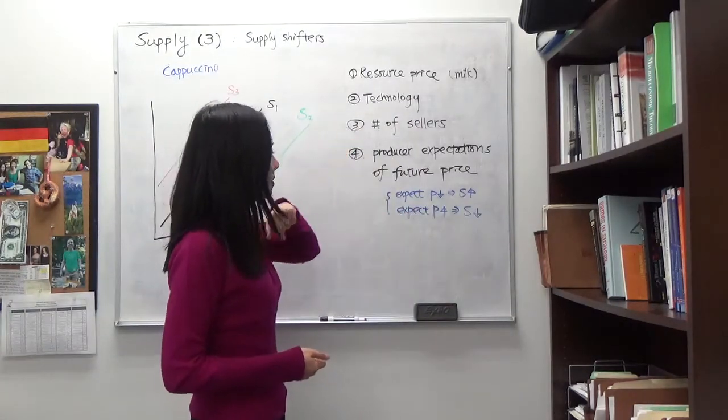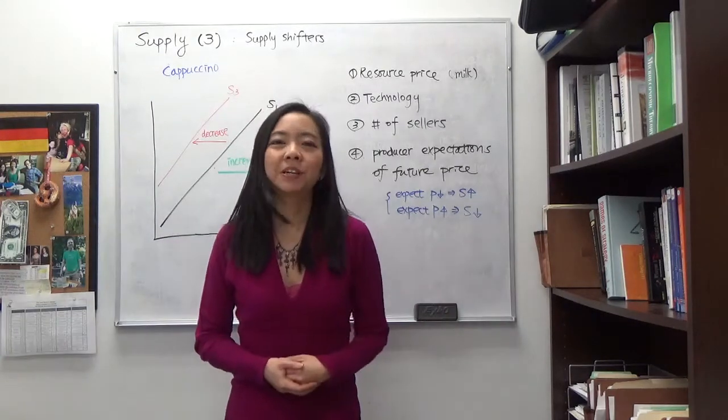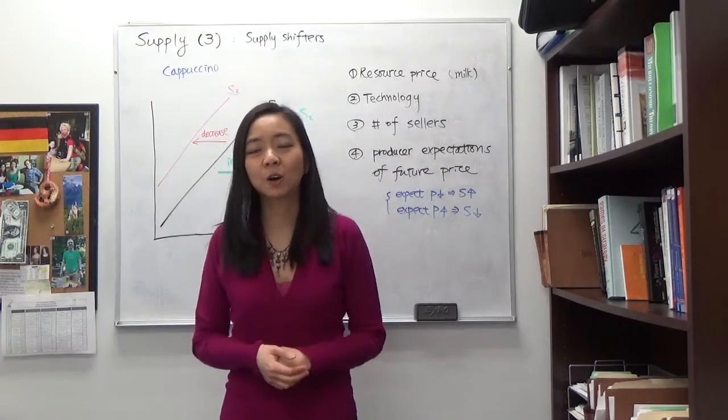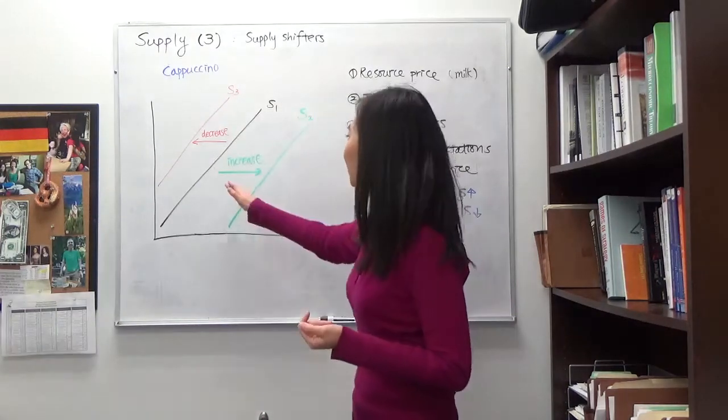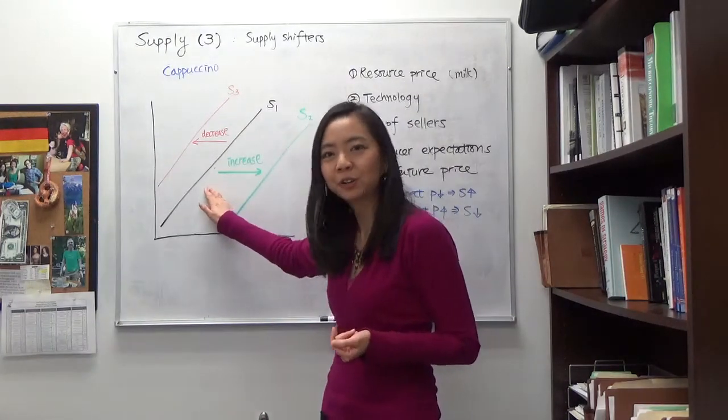And the third one is number of sellers. So suppose there are a lot of immigrants coming to Franz town and they all decide they're going to sell cappuccino, then that's going to shift our supply curve to the right.